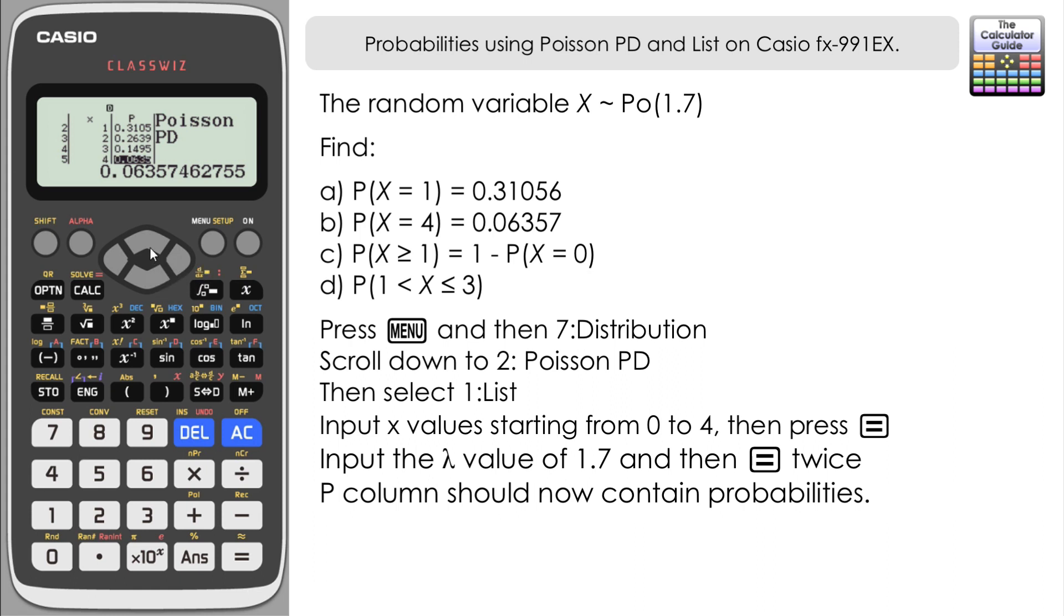Let's scroll up to X equals 0. We've got the probability here: 0.18268. I'm going to do my 1 minus calculation in calculate mode. I just want to store this into the ClassWiz memory by pressing store and then I'm just going to choose memory A, confirm stored to A.